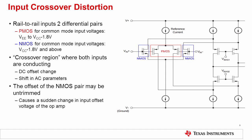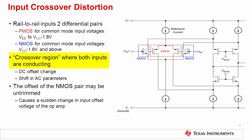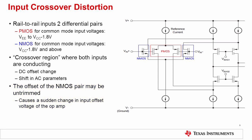Moving on to another source of input stage distortion, let's address input crossover distortion. The schematic shown is a classic rail-to-rail input CMOS op amp with a double-folded cascode containing both a PMOS and NMOS input pair. For common mode input voltages from the negative supply up to 1.8 volts below the positive supply, the PMOS input pair operates while the NMOS pair is idle. For common mode voltages 1.8 volts below the positive rail and above, the NMOS input stage takes over and the PMOS pair is idle. There is a crossover region about 1.8 volts below the positive rail where both inputs are conducting. In that region, the DC offset can change and there may be a shift in the amplifier's AC parameters.